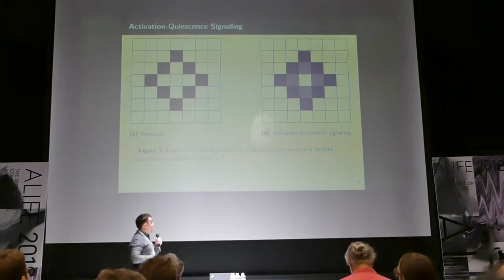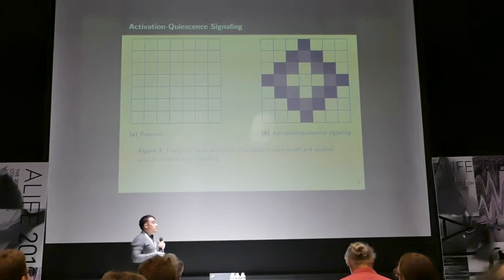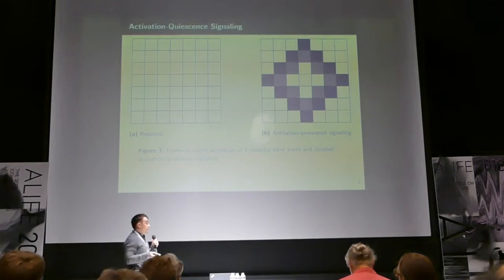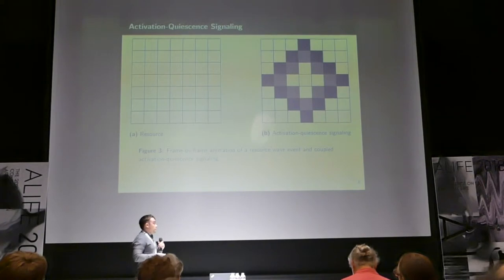The activation pattern traces out and follows the resource wave so that these cells can take down the resource. However, if we keep going, the resource wave has a limited extent. And so, if these cells keep activating, there's a cost, a resource cost to activation. And we'll start to have a problem with all this erroneous activation and all this resource being wasted.